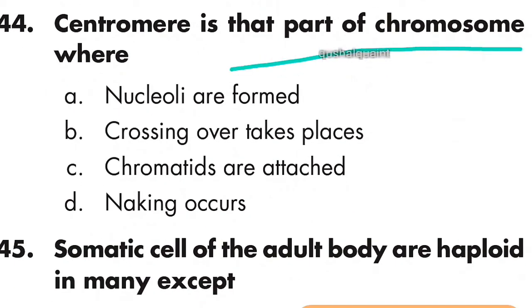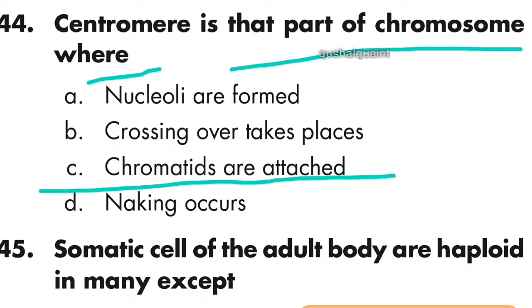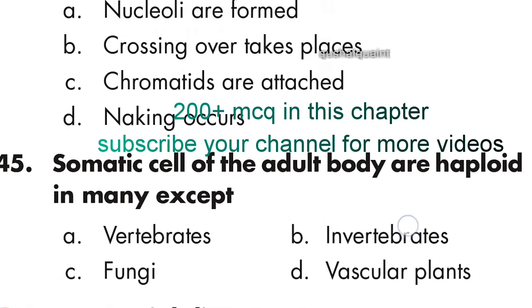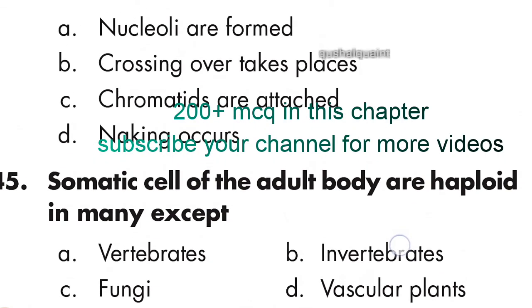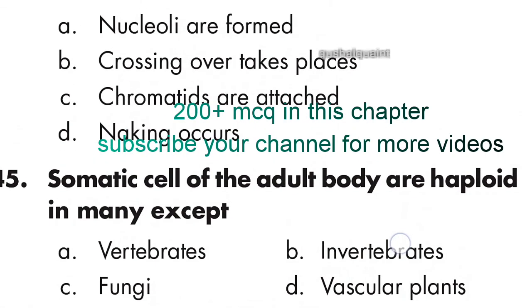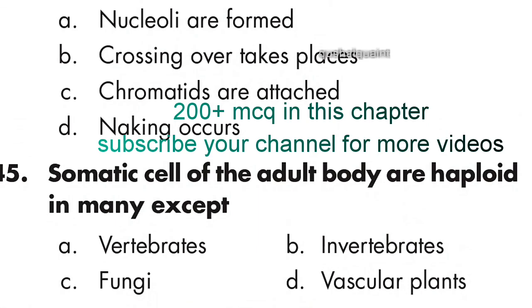Question 44: The centromere is that part of a chromosome where chromatids are attached — option C is correct. Question 45, the last question: There are 200 plus MCQs in bacteria and gram staining, so please subscribe our channel for more videos.